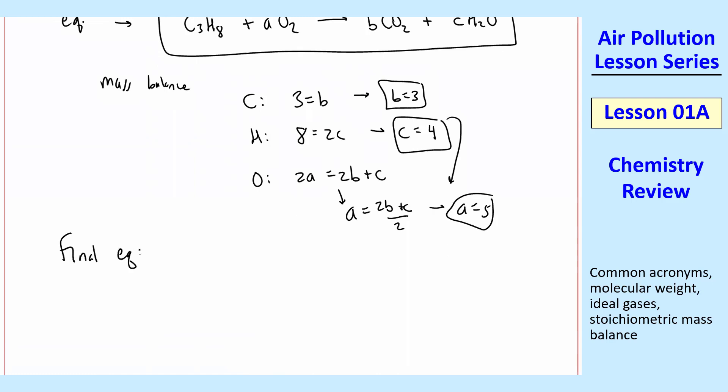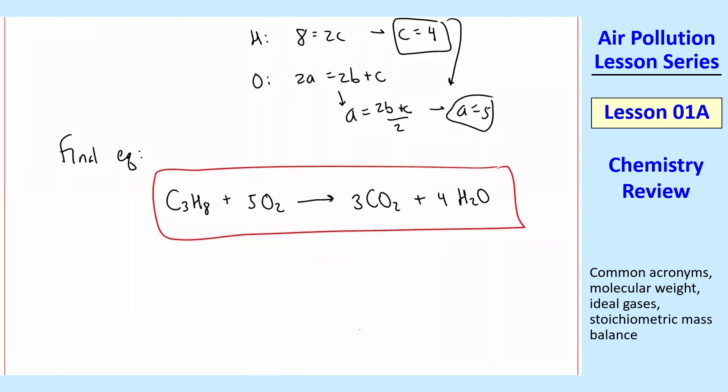So our final answer, the final chemical equation, will be written as, plugging in all these coefficients, C3H8, that's our propane, plus 5 O2 yields 3 CO2 plus 4 H2O. That's our water vapor.